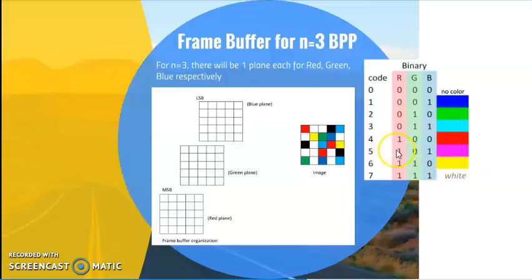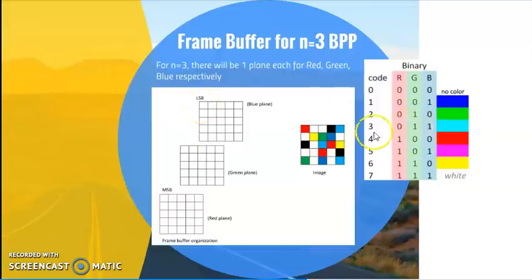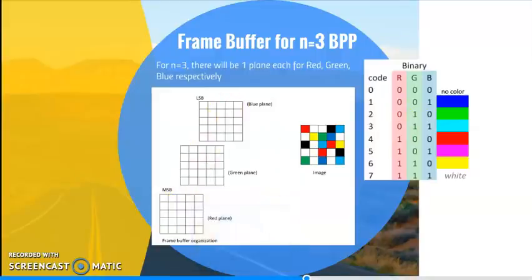A combination of red and green with no blue component gives yellow. These are the different combinations of RGB colors. For an image of size 5×5, the frame buffer size is also 5×5 for every plane, and there are three planes since n equals 3. For the first pixel which is black, the binary is 000, so I store 0 in all three planes. For a green pixel, the code is 2 and binary is 010, so I store 0, 1, 0 across the planes.